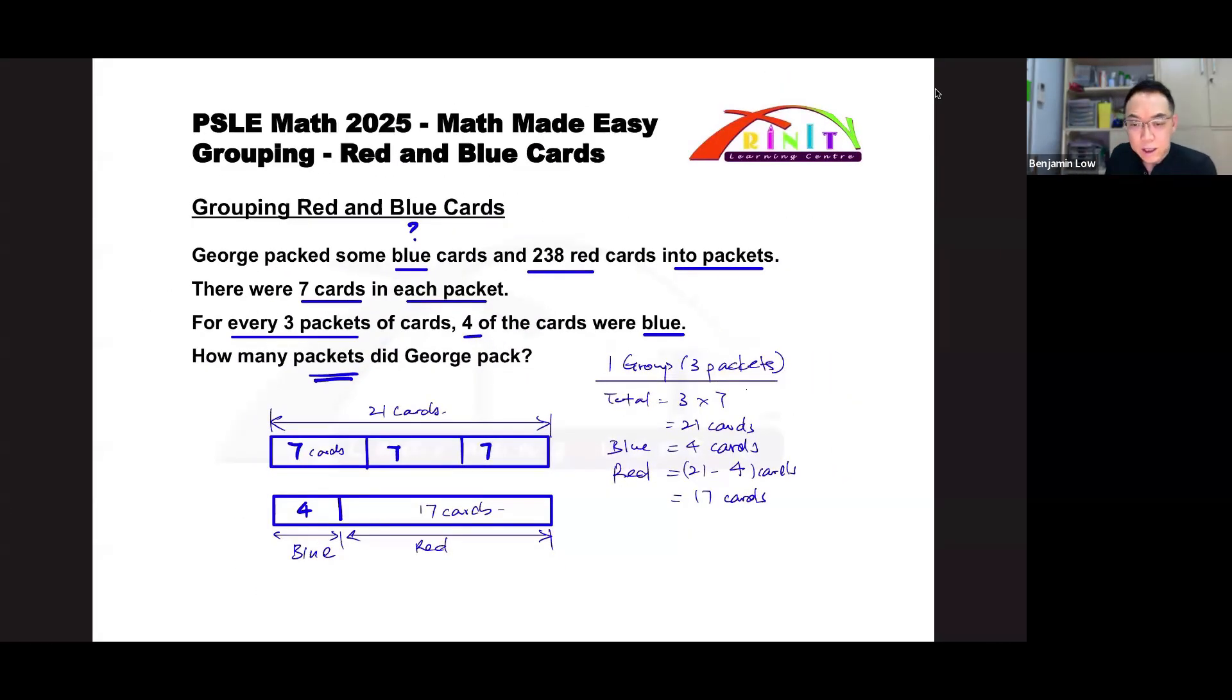So far, are you following? We know that there are 17 red cards in a group, and we also know that there are 238 red cards all together. Since there are 17 in one group and there's 238 all together, what should you do?